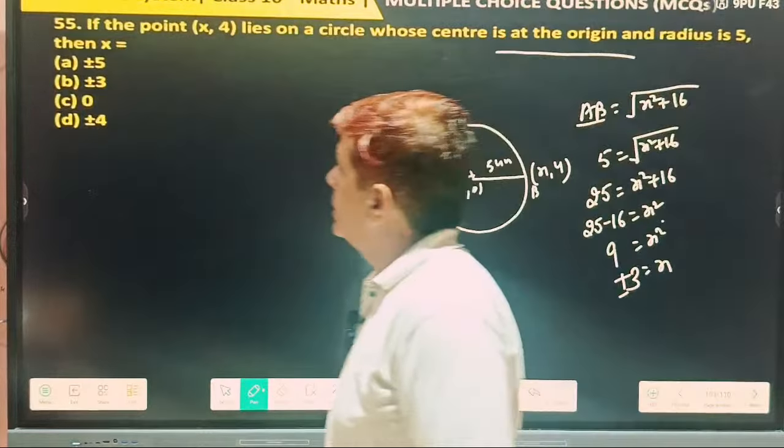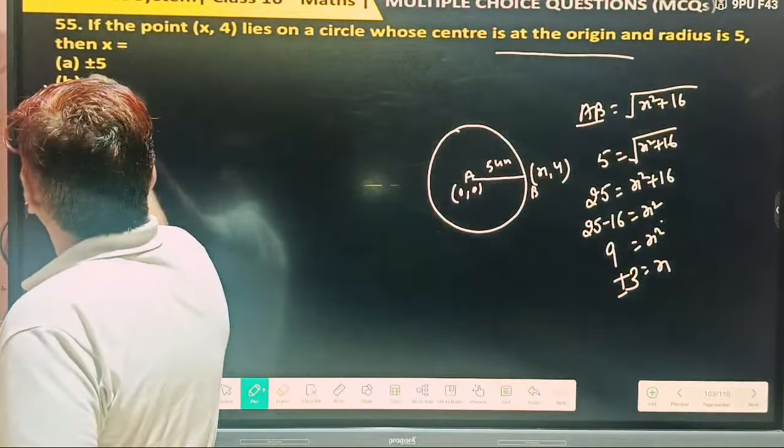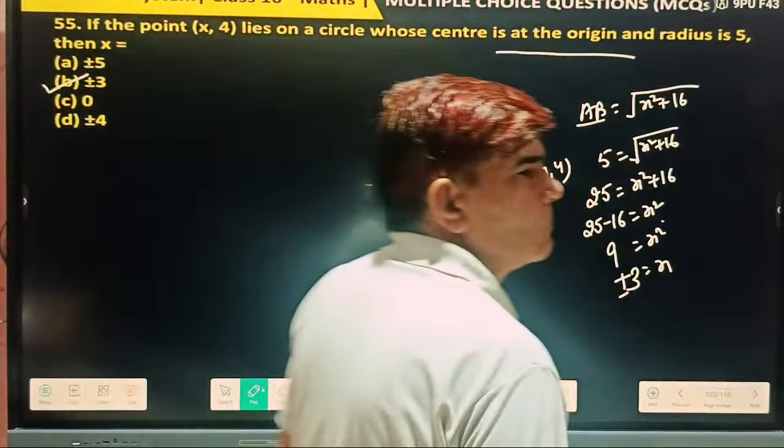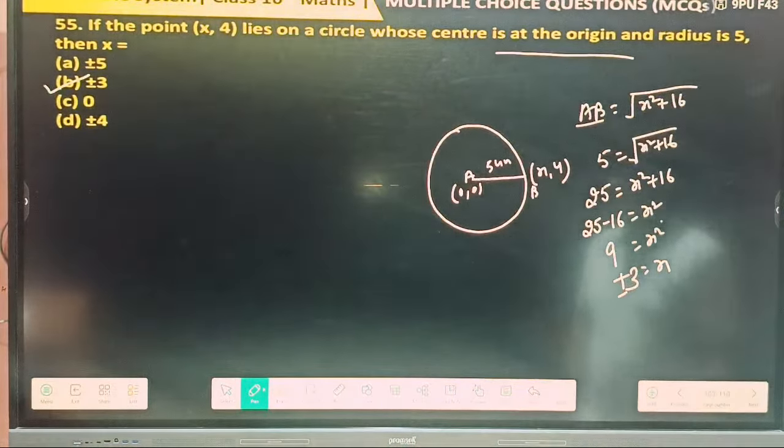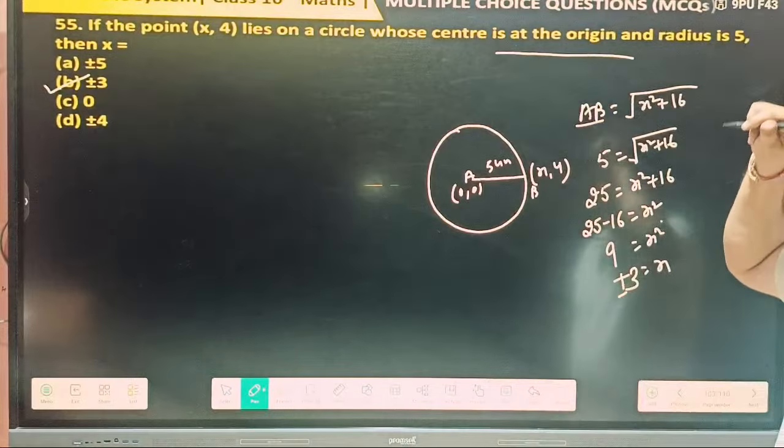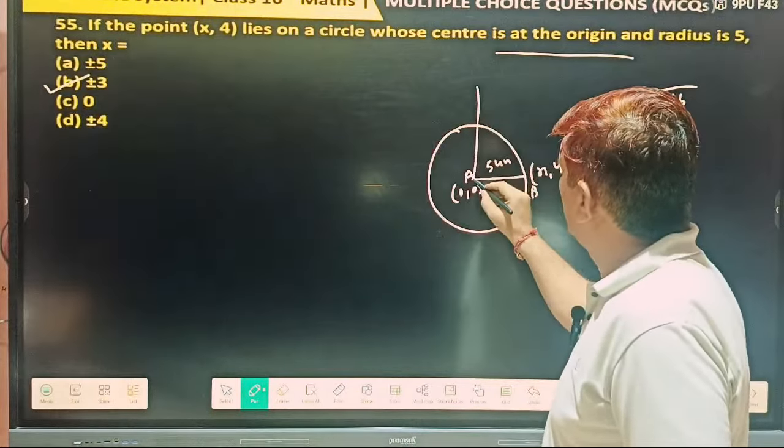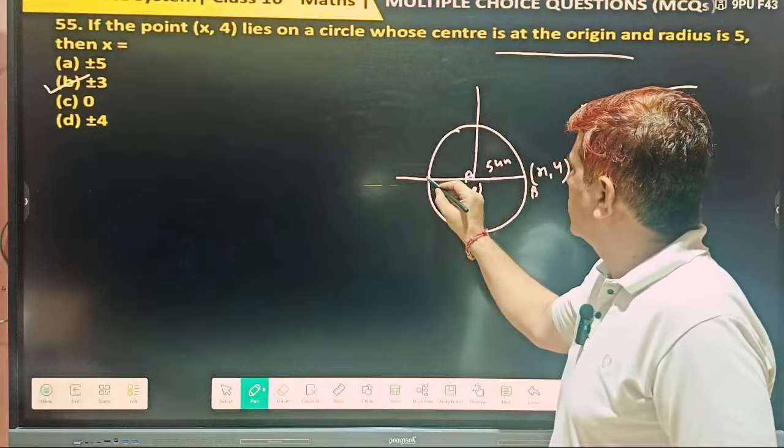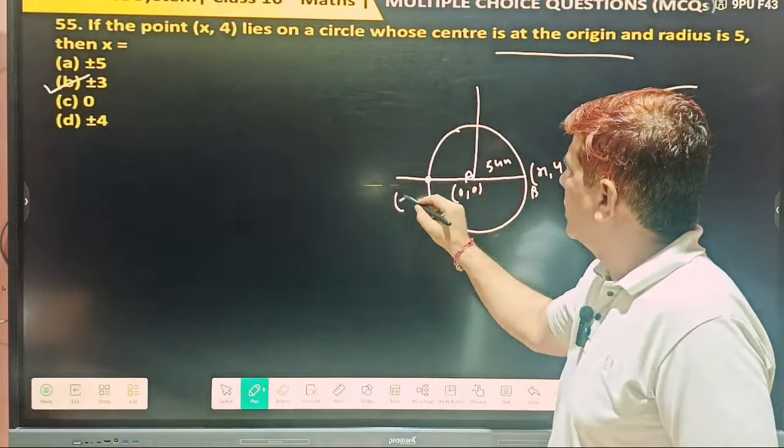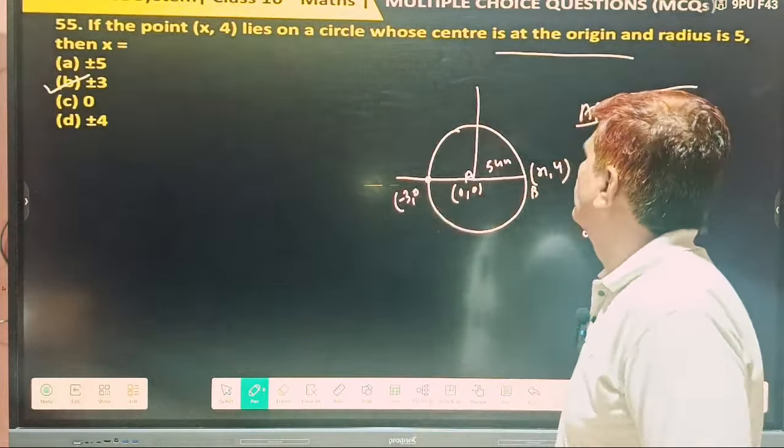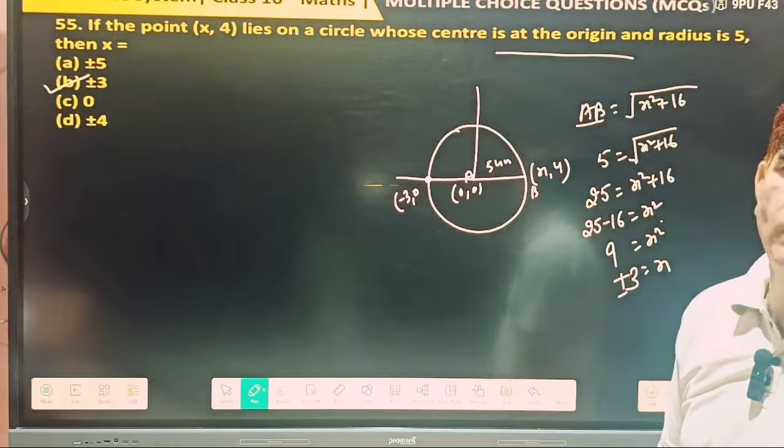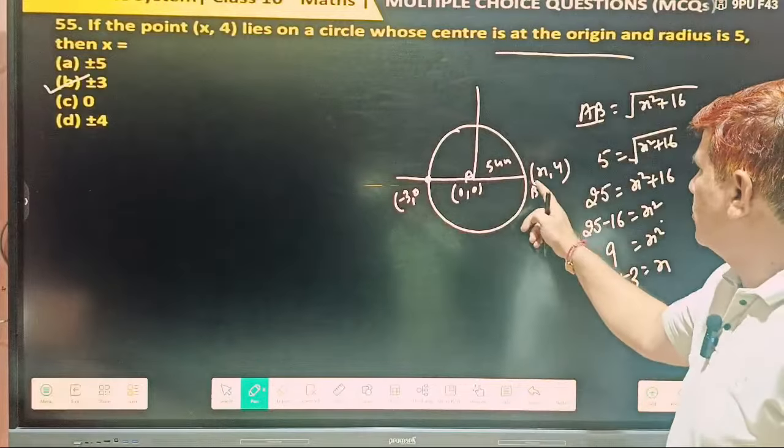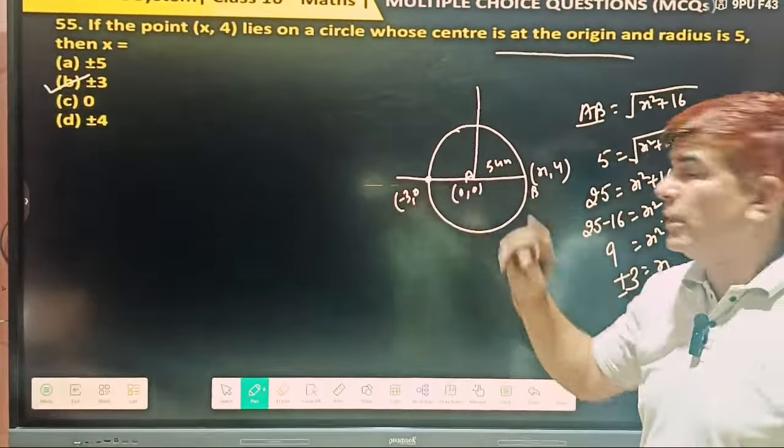Anywhere given plus minus 3? Yes, given this is. Got it or not? So it's like this. This origin is this. So here also one more point whose coordinates are minus 3 and 0. So that's why plus minus came here. If circle pass through this point 3, then pass through this minus 3 also.